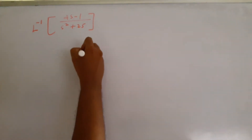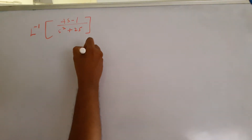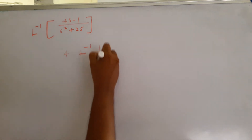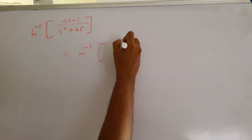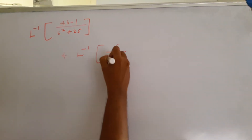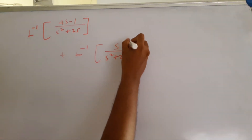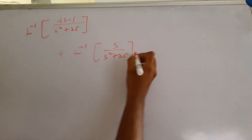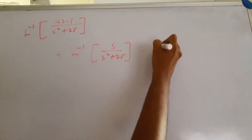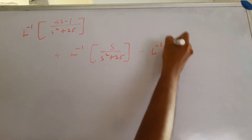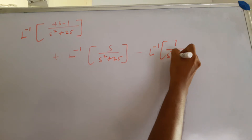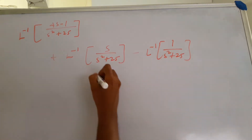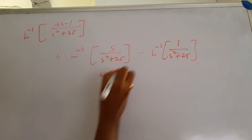We are finding the inverse Laplace transform. So L inverse of S over S squared plus 25. Since 4 is a constant, I have kept it outside. So we need L inverse of 1 over S squared plus 25, where 25 is 5 squared.